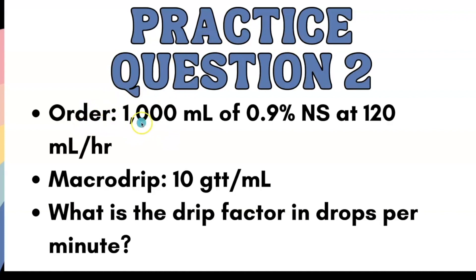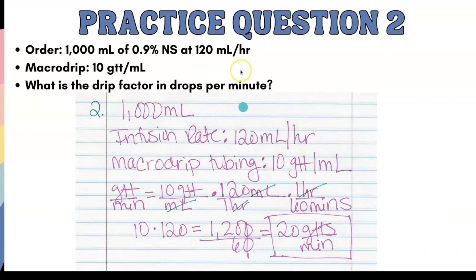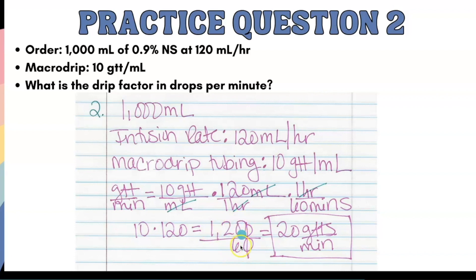Practice question two: the order is 1,000 milliliters of normal saline at 120 mls per hour. The macro drip is 10 drops per milliliter. What is the drip factor in drops per minute? Once again, what are we looking for? Drops per minute goes on the left. Drops goes up top, married to one ml — so 10 drops per milliliter. We need to cross out milliliters using the infusion rate: 120 ml over one hour. To cross out the hour, one hour has 60 minutes. Cross multiplying gives 1,200 divided by 60. The answer is 20 drops per minute.